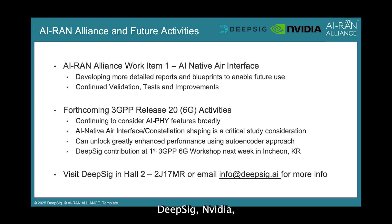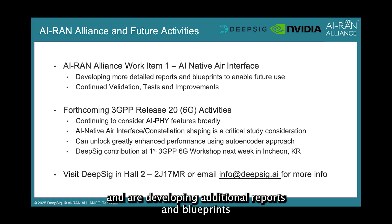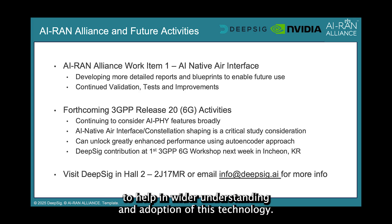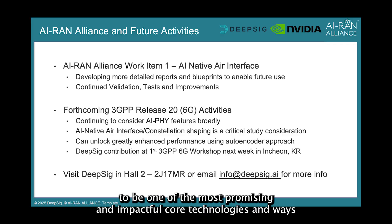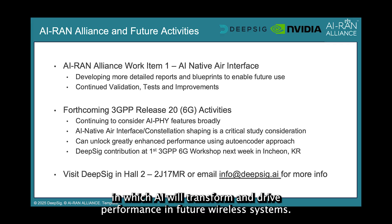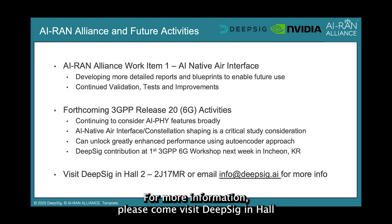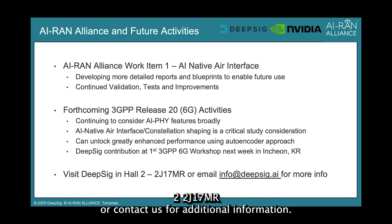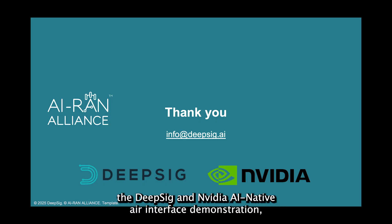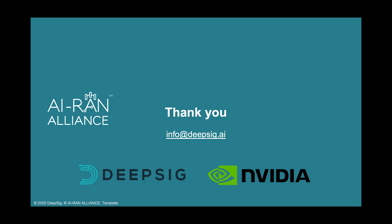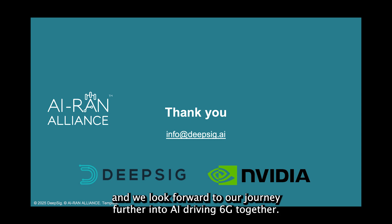DeepSig, NVIDIA, and the AI-RAN Alliance continue to mature this technology and are developing additional reports and blueprints to help in wider understanding and adoption. 3GPP Release 20 study items for the 6G standard begin this year, and we believe this to be one of the most promising and impactful core technologies and ways in which AI will transform and drive performance in future wireless systems. For more information, please come visit DeepSig in Hall 2, 2J17MR, or contact us for additional information. Thank you for taking the time to view the DeepSig and NVIDIA AI Native Air Interface demonstration, and we look forward to our journey further into AI driving 6G together.